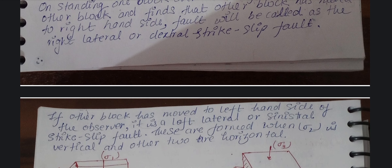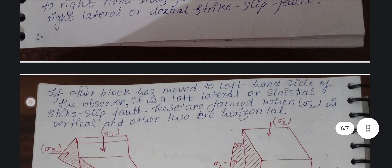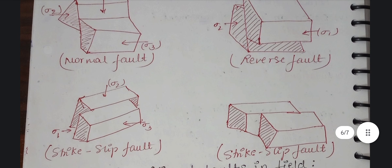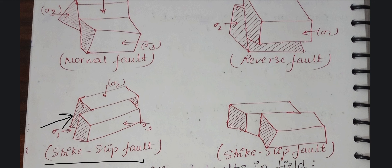The left-lateral type is called sinister or sinister strike-slip fault. These are formed when sigma 2 is vertical and the other two are horizontal. Looking at the diagram: where the shift is to the right-hand side, it is called right strike-slip, and where the shift is to the left-hand side, it is called left or sinister strike-slip.